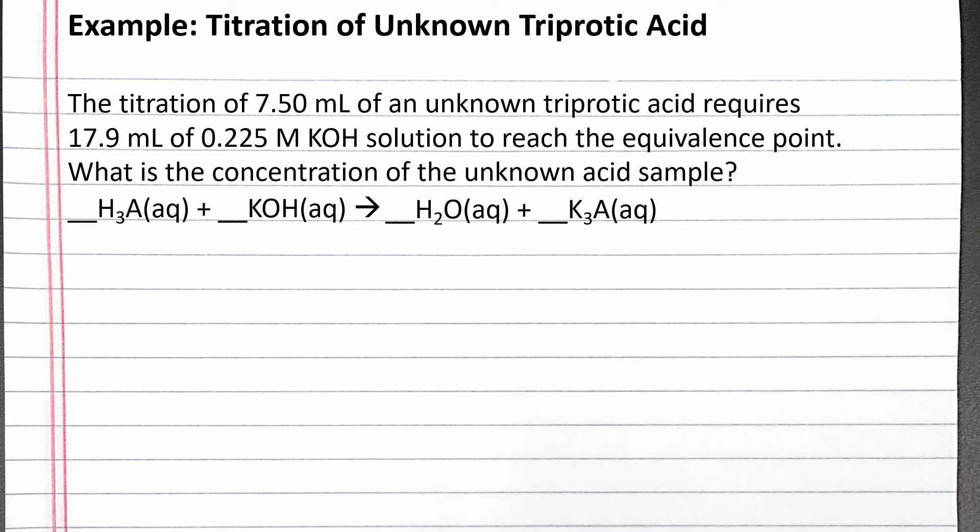We know potassium has a 1+ charge, and the anion A has a 3- charge, so we need 3 potassium for every 1 A3- anion in the formula unit. Now, let's balance.